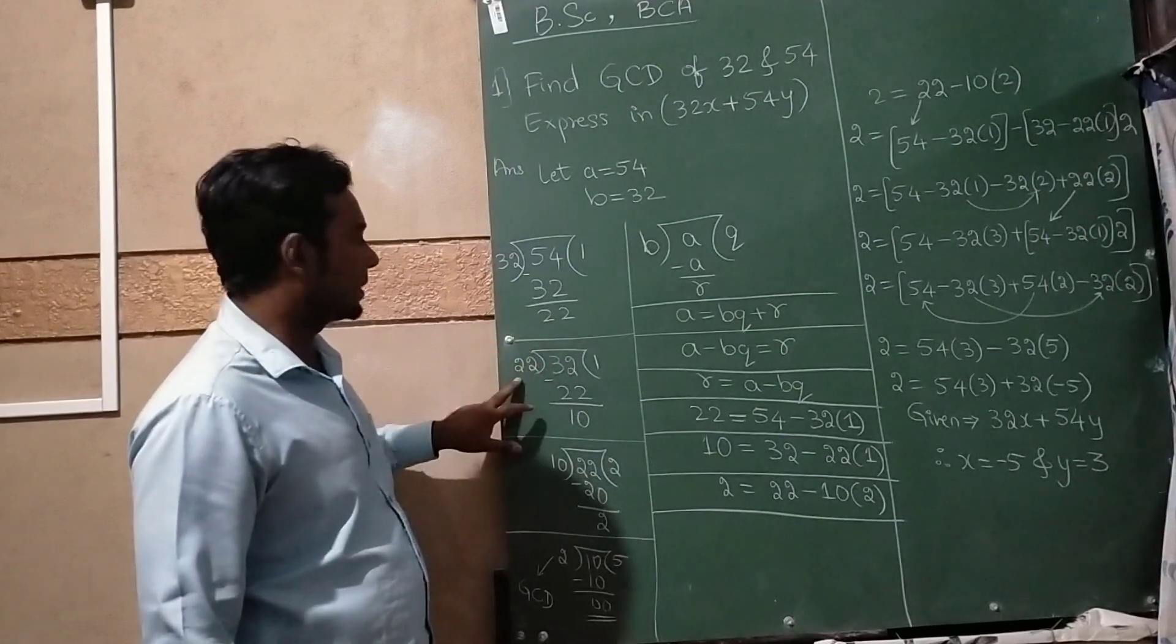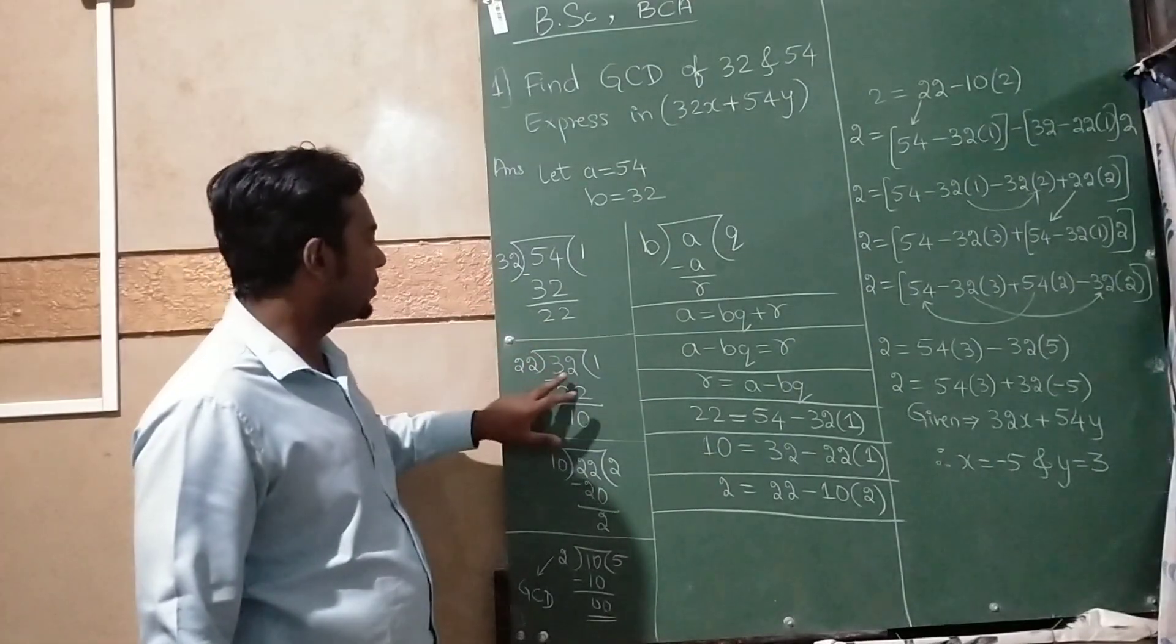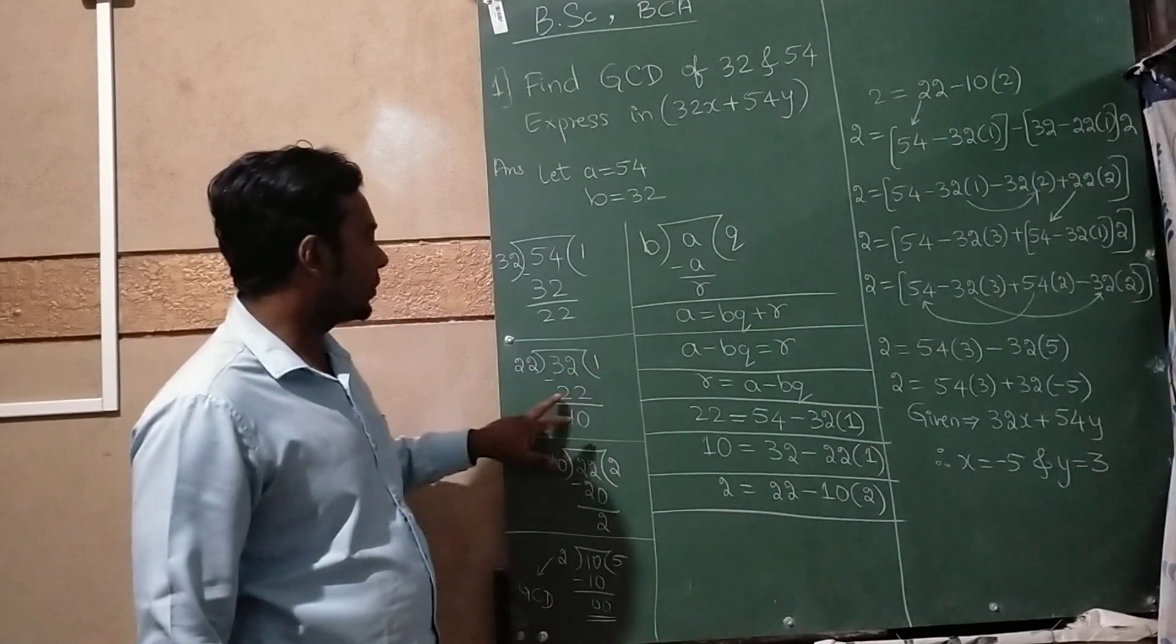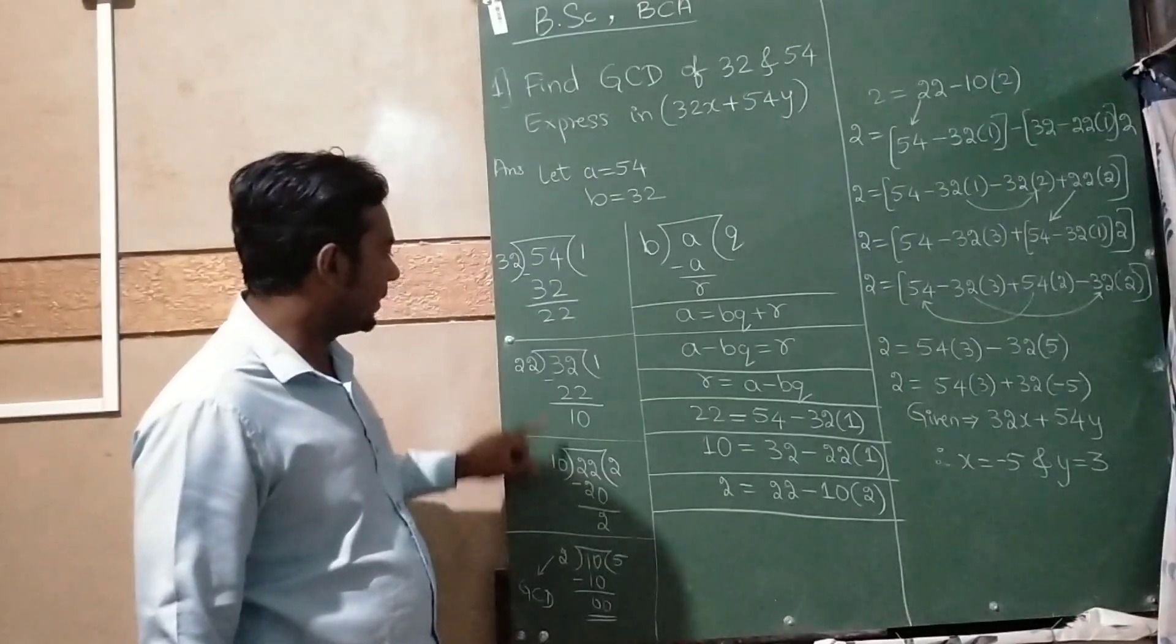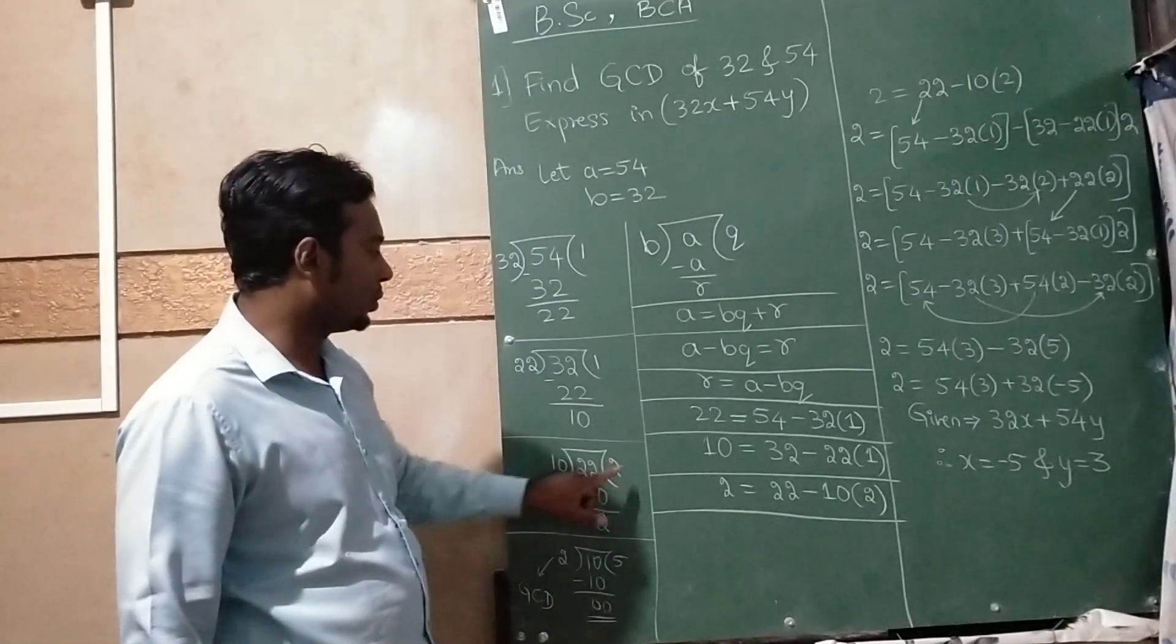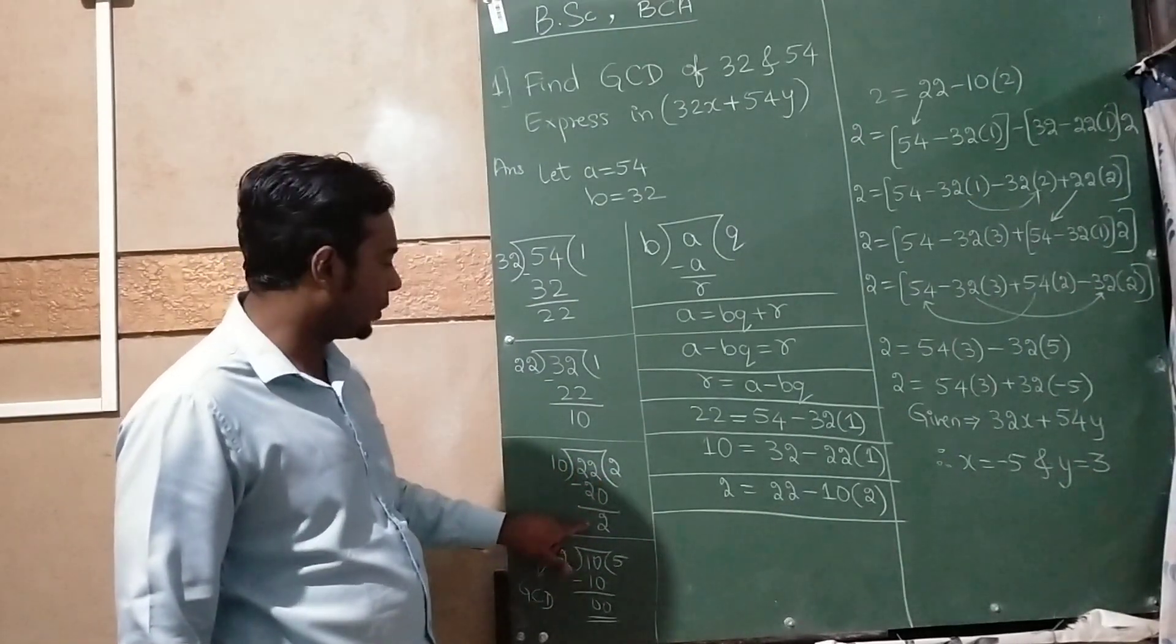Similarly, taking 22 here and 32 inside, 22 ones are 22, subtracting gives 10. Then taking 10 here and 22 inside, 10 twos are 20, subtracting gives 2.